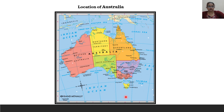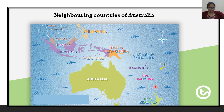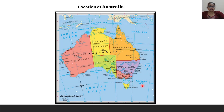Australia's neighbouring countries include Malaysia, Indonesia, the Timor Islands, Papua New Guinea, and several islands which include the Solomon Islands, Vanuatu, and New Caledonia, which lie in the northeast, east, and south Pacific Ocean respectively. In the southeast, the Tasman Sea separates New Zealand from Australia.